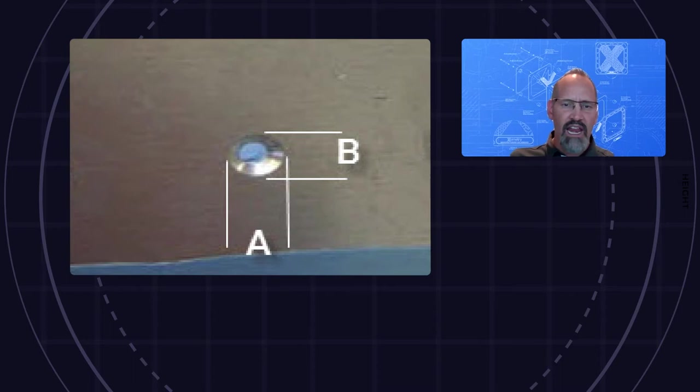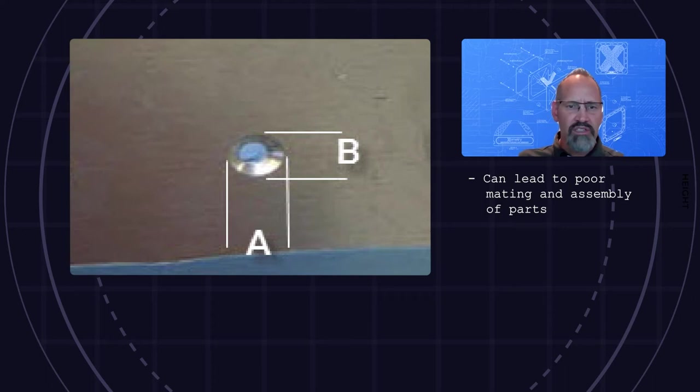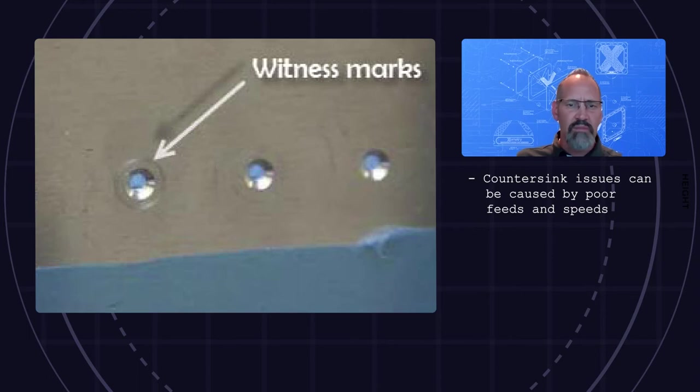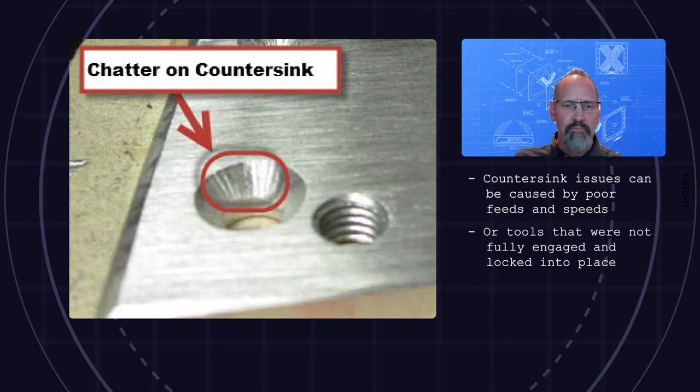Also known as FOD. The next image displays an oblong hole that can lead to less than full contact of mating parts or may lead to a poor assembly. All of the last three examples could have been avoided. These are generally caused by feeds and speeds of the machining process, or a tool that was not fully engaged and locked into place.